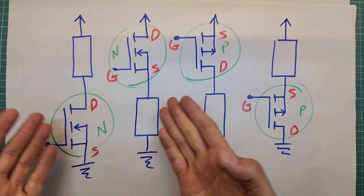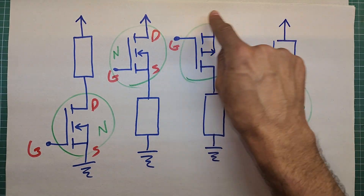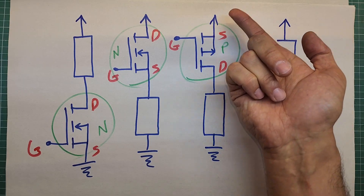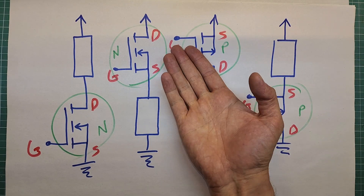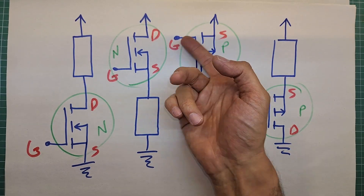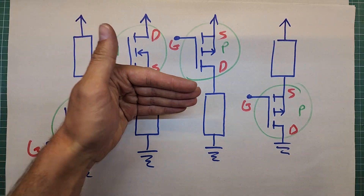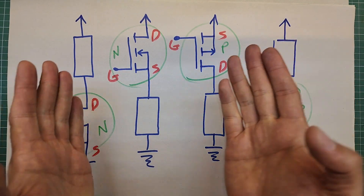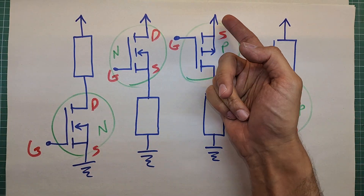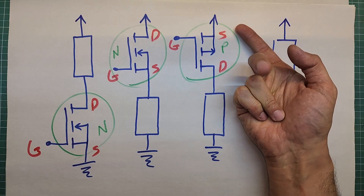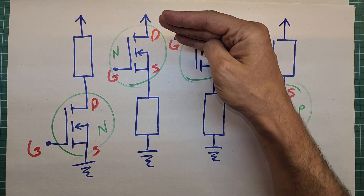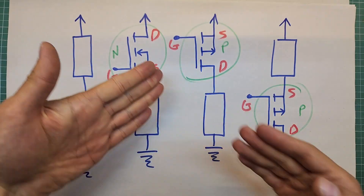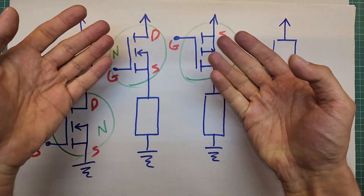If you need to switch the high side, simply use a P-channel, because the source pin is hooked to VCC and its voltage is known. By applying a voltage lower than the threshold to the gate, you turn it on; higher than the threshold turns it off. For example, if the threshold is minus 4 volts and VCC is 20 volts, applying voltages lower than 16 volts to the gate turns the transistor on, and voltages higher than 16 volts turn it off.